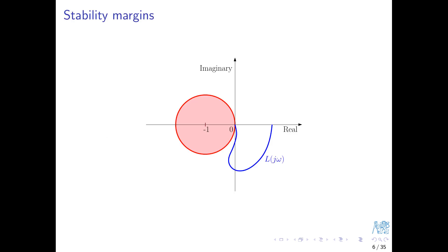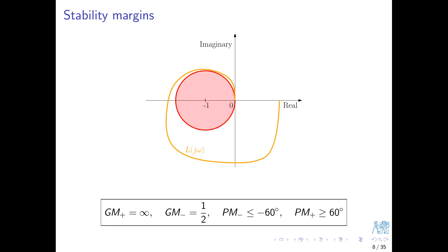This result allows us to make striking conclusions about closed-loop stability margins. The fact that 1 + L can never be smaller in magnitude than 1 means there is a forbidden region in the complex plane that the Nyquist curve can never enter. We can immediately conclude that the gain margin is infinity — we can multiply the open-loop gain however much we like without losing closed-loop stability. For decreasing gain, the margin is 1/2. The phase margins are minus and plus 60 degrees.